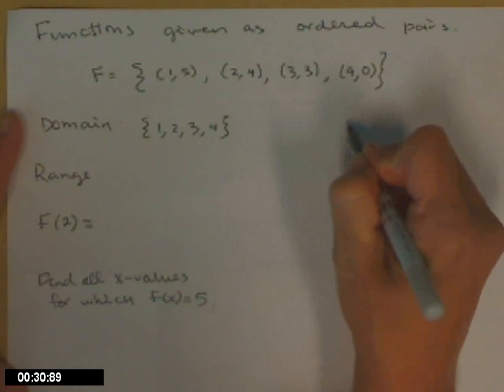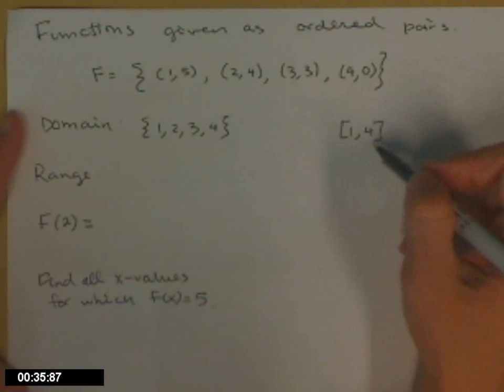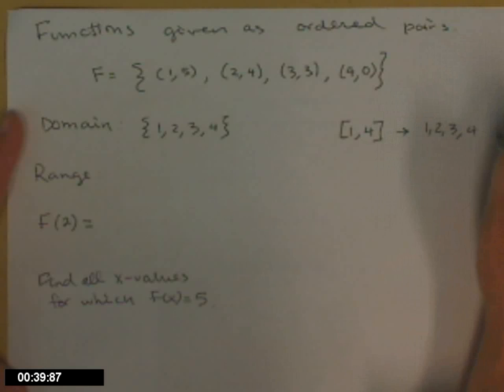Notice how that is different from this notation. If I use interval notation, this implies 1, 2, 3, 4, plus all of those numbers in between, all the fractions, all the decimals. And we don't really have those. So we don't want to go that way.